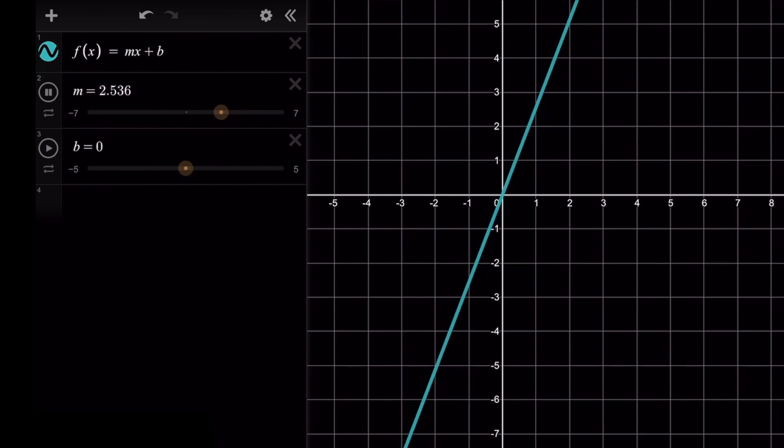So the domain is going to be all real numbers, and the range is also going to be all real numbers. So everything is a possible input, and everything is a possible output.